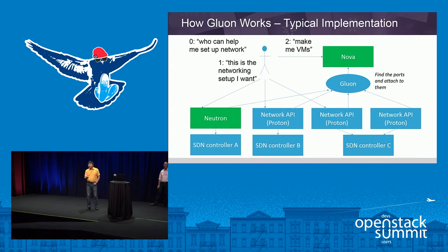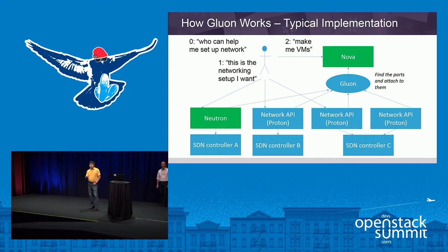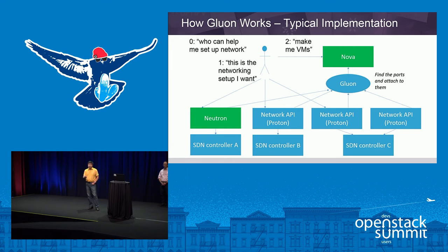From the workflow perspective, the user can find those API endpoints through Keystone or some other service discovery mechanism. The user can then use the Protons or Neutron to create the port and network services, then launch virtual machines with the port as a parameter. Nova talks to Gluon and gives the port information, and Gluon handles those ports respectively — whether handled by the Proton and its backend, or by Neutron in the regular way.